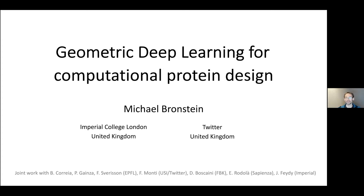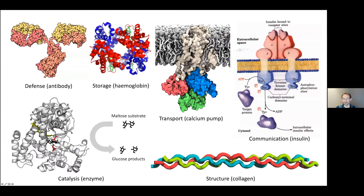Today I would like to talk about how to use geometric deep learning for computational design of proteins, and more broadly understanding how proteins interact with each other and other molecules. Proteins are probably the most important biomolecules — you can see them everywhere in all biochemical processes in our body, from defense mechanisms such as antibodies to catalytic reactions, giving structure to our bodies such as the skin.